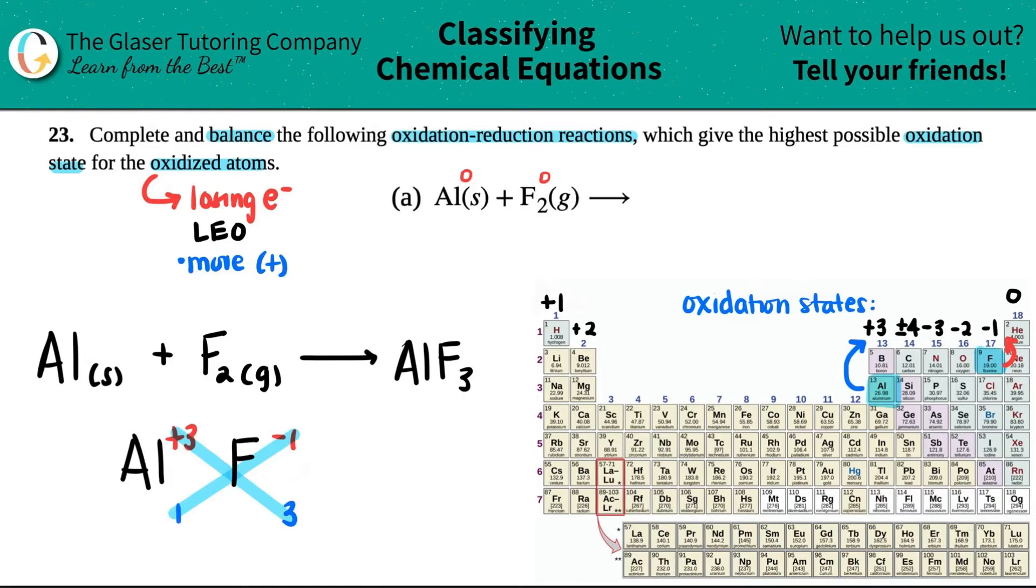Now, if you need to add a state, this goes by your solubility rules. Fluorine is a halide, and usually halides are soluble, which means that they're aqueous, except if it is grouped with a lead, a Pb, a mercury, which is Hg, or Ag, which is silver. But aluminum is not one of those exceptions, so that would mean that this would be aqueous. This whole reaction is happening in an aqueous solution in water. That's the solvent for these.